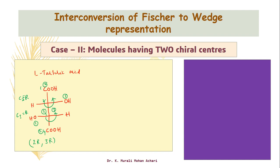This Fischer representation, we are going to convert into wedge representation. As we know, the Fischer representation always gives you an eclipsed conformation. The vertical lines always present away from the observer, and the horizontal lines are near to the observer. It is necessary to understand that once you convert from Fischer to wedge representation, you should not invert the configurations. Once you start with the 2R,3R configuration in Fischer, you have to end up with the 2R,3R configuration in wedge also.